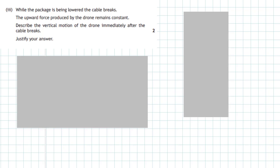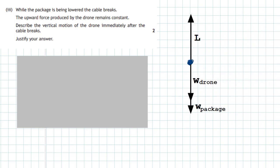Question two, part three. While the package is being lowered, the cable breaks. The upward force produced by the drone remains constant. We need to describe the vertical motion of the drone immediately after the cable breaks. In the force diagram, we have the weight of the drone and the weight of the package acting downwards, together exactly equal and opposite to the lift force upwards. If the package breaks loose, there is less weight acting downwards, so the lift force becomes bigger than the drone's weight, producing an upward acceleration.